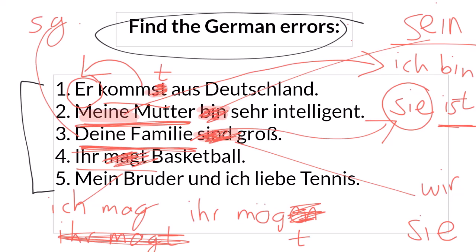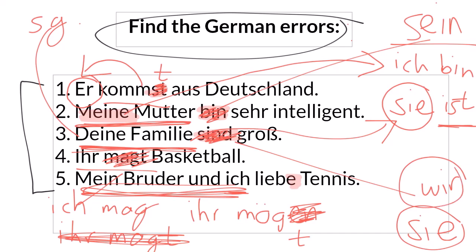Number five: 'mein Bruder und ich' — the verb ending is wrong, and it's subtle. The subject is not just 'ich'; it's 'mein Bruder und ich', which is two people — not 'they' but 'we'. So you need the wir ending. Instead of 'lieber', we use 'lieben', which is pretty much always the same as the infinitive. My brother and I love tennis.